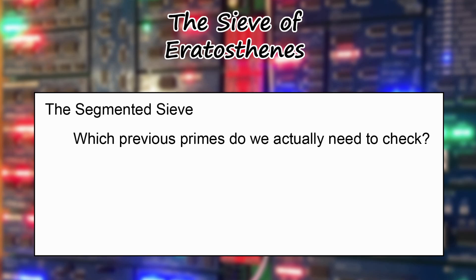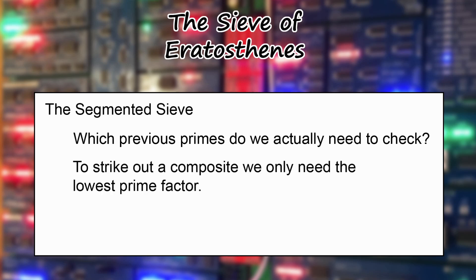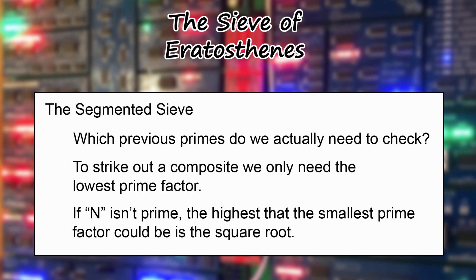A good question to ask is: which primes do we actually need to check to determine that a number is not composite? Many numbers were struck out more than once, but we only need one factor to know a number is composite — and we'll always strike it out with its lowest prime factor. If a number isn't prime, the smallest that its lowest prime factor could be is the square root of that number, because if we were multiplying it by anything smaller than itself we would have encountered that other factor first.